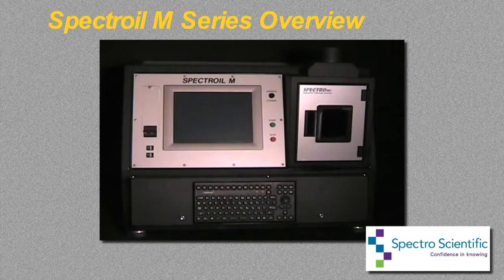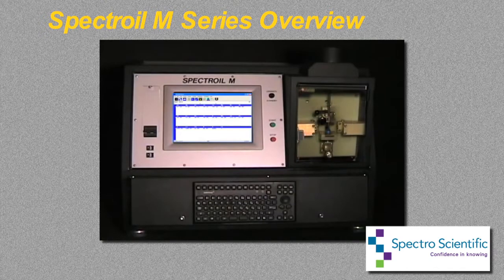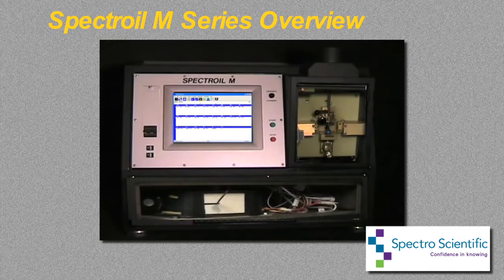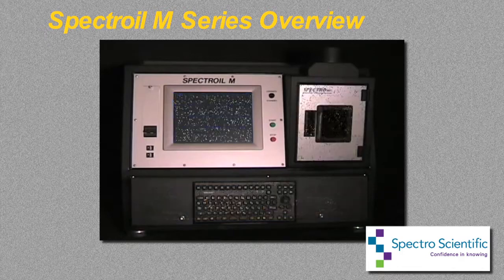The Spectroil is the center of a predictive maintenance program. The resulting data, when compared to previous analysis and allowable limits, may indicate a sound mechanism showing only normal wear, or it may point out a potentially serious problem in its early stages. With this advance warning, steps may be taken to correct the situation before serious damage or injury occurs.